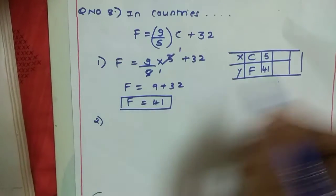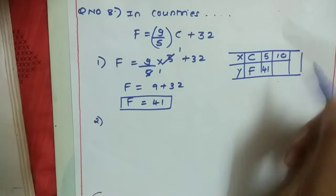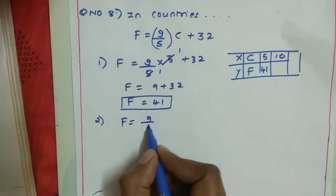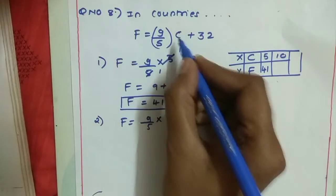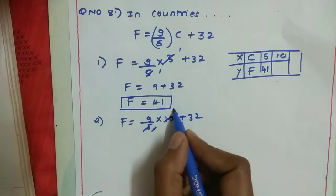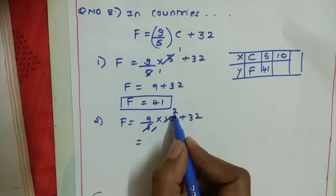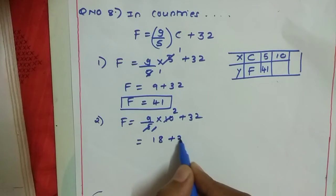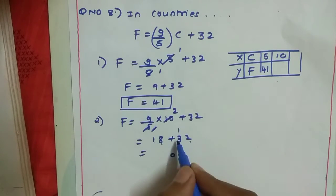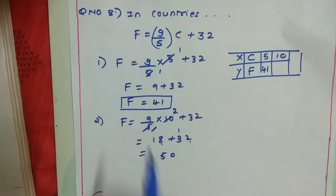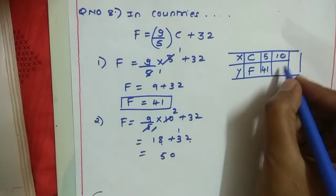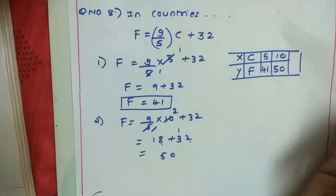Next, put C as 10. F = 9/5 × 10 + 32. 10 divided by 5 is 2, so F = 9 × 2 + 32 = 18 + 32 = 50. So when the temperature is 10 degrees Celsius, in Fahrenheit it will be 50.